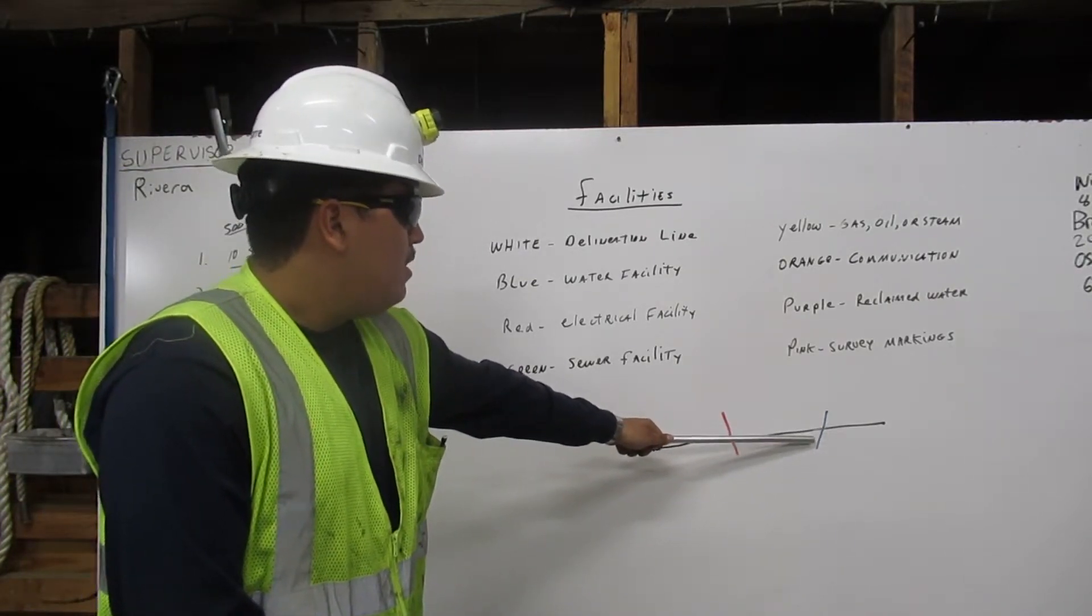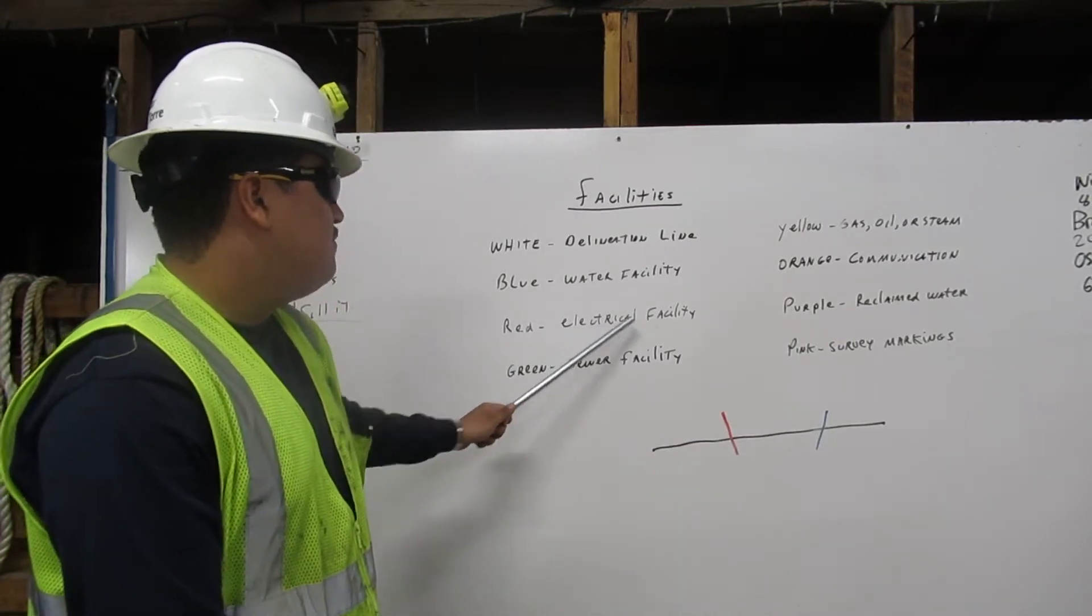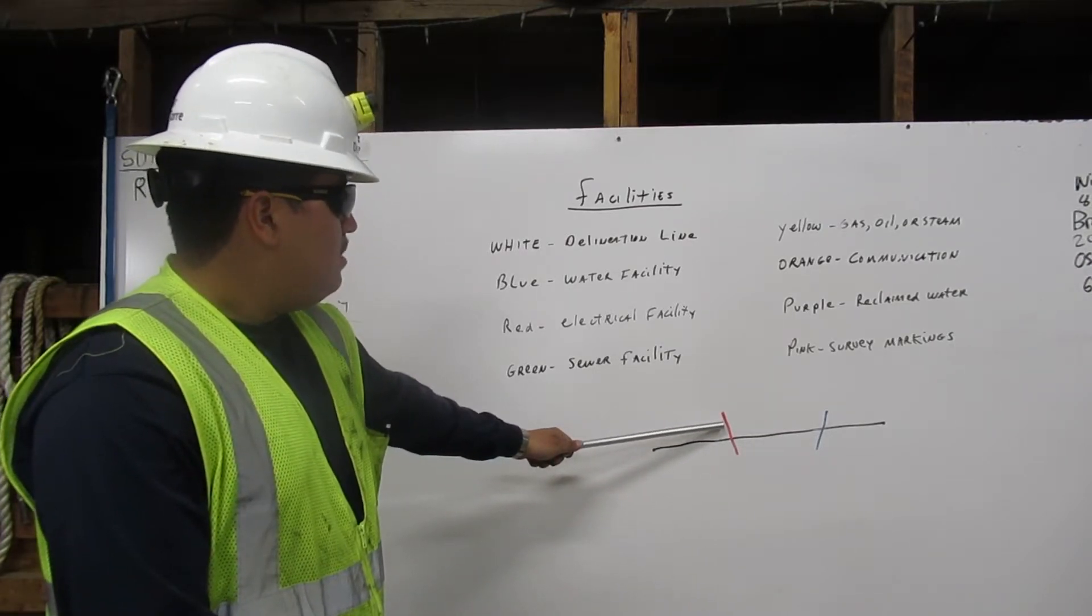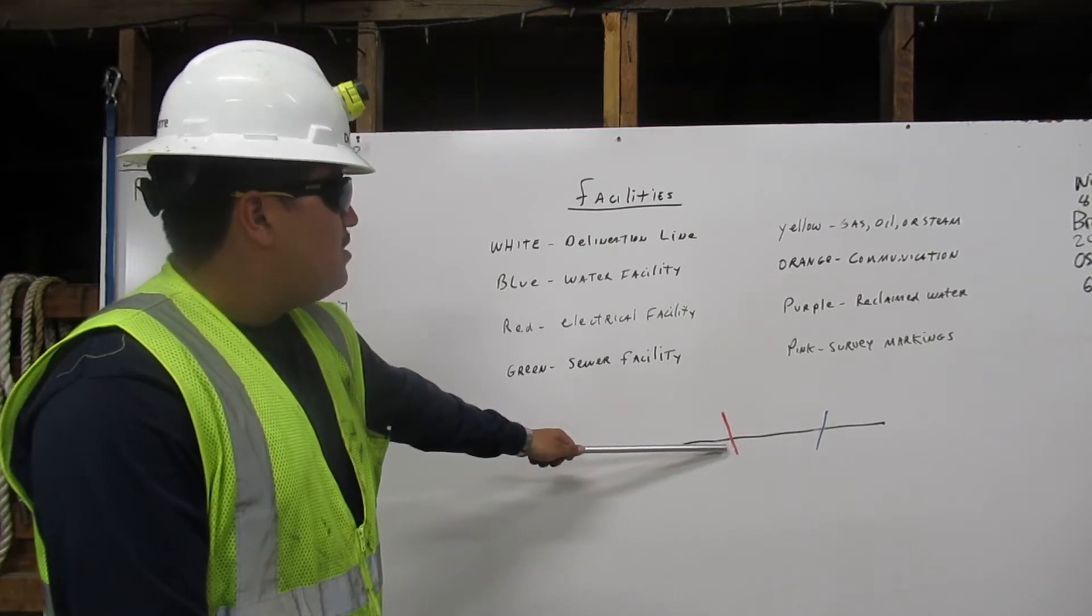It is below our delegation line. Next is red. Red represents electrical facility, like in our figure below. The red electrical facility is below our delegation line.